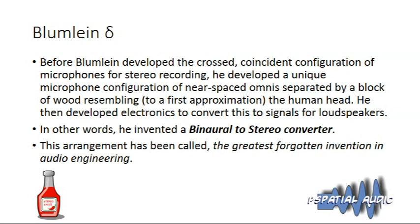Blumlein Delta derives from the very first experiments Blumlein did in stereophony — he called it binaural stereo — back in 1928. At that time there were only pressure microphones, no figure-of-eight or cardioid. His original microphone array consisted of two omnis separated by the interaural space — about nine inches — separated by a block of wood, essentially a dummy head recording. He then developed electronics to convert the signals to loudspeaker signals based on inter-channel level differences, eliminating the phase differences that exist on a dummy head.